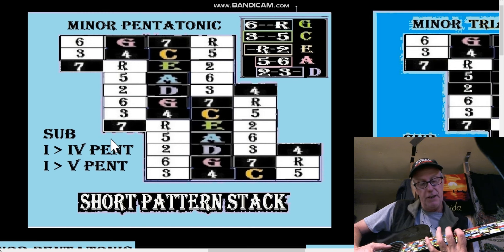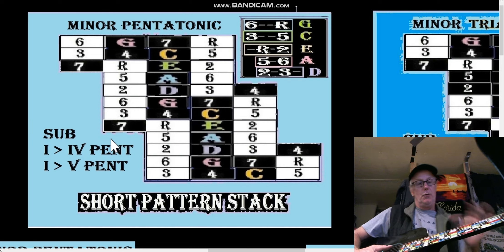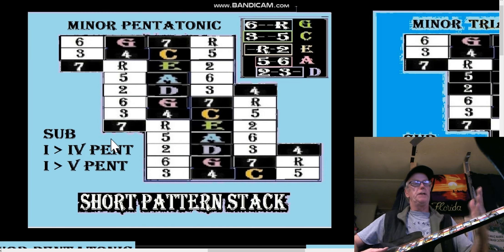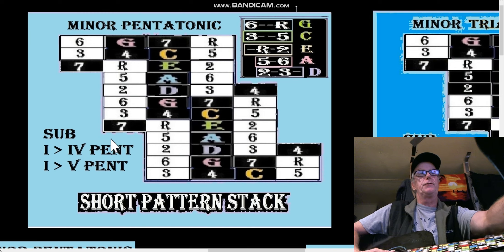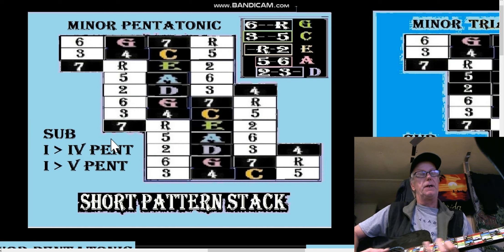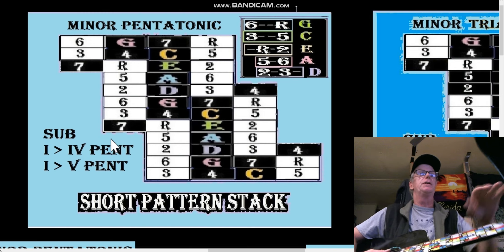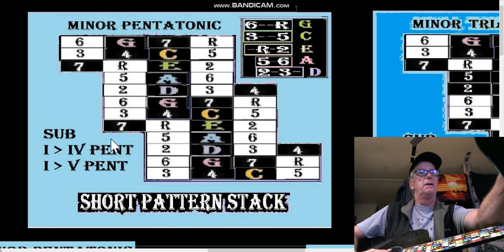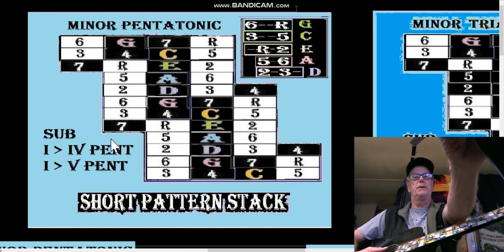We're going to play in a G shape. A is the sixth — here's your A minor pentatonic. Just follow a G shape: six, root, two, three, five, six, root, two, three, five, six. Whatever minor note we start on, just play the pentatonic inversion. The A shape pentatonic — root is root, two, three, five, six — is the fourth inversion. There it is, there's our A pentatonic.